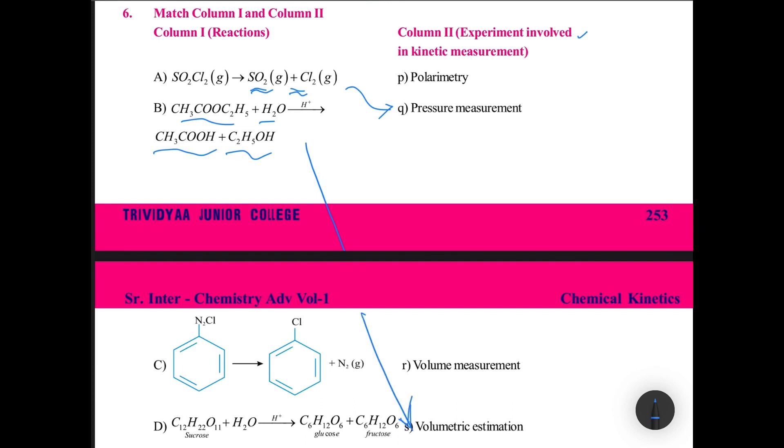Volumetric estimation. And here you see benzene diazonium chloride converted to chlorobenzene with evolution of nitrogen gas. Nitrogen gas is a gas with volume, so volume measurement is best for this.